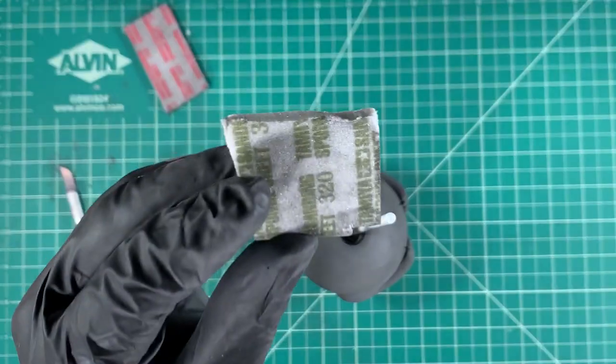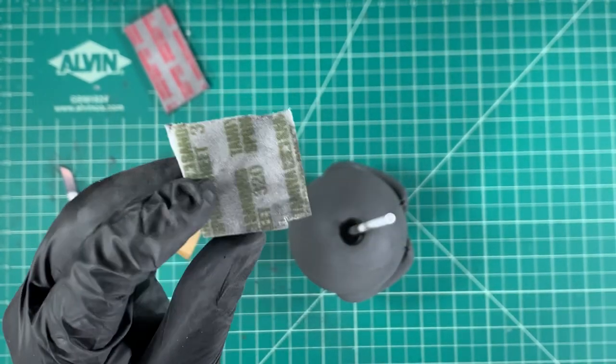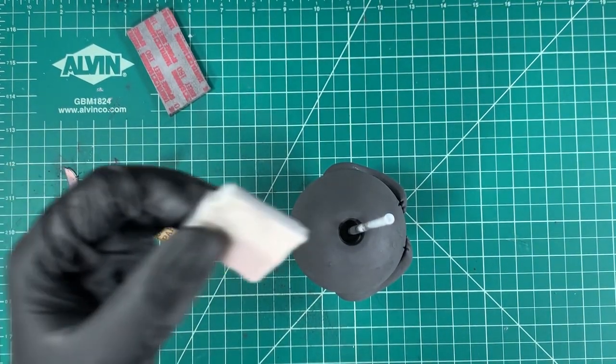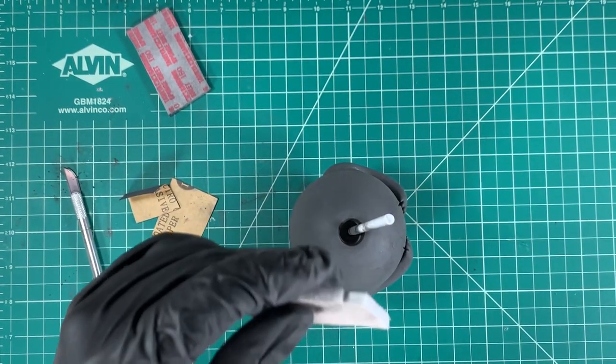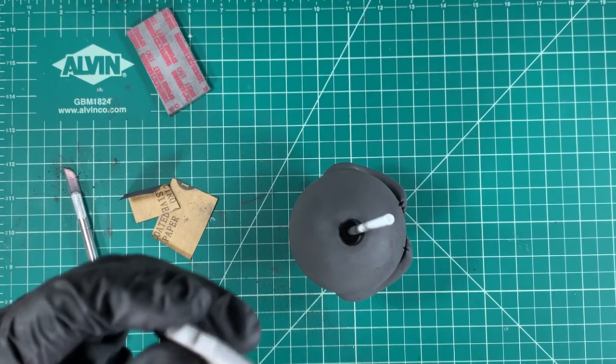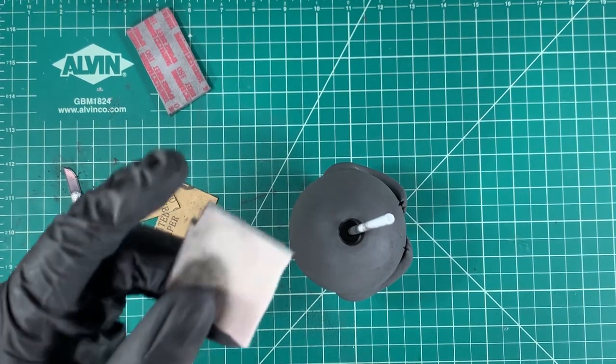Okay, so I'm going to be switching to the 320 grit now. This is a much finer paper. This will start getting rid of some of those imperfection scratches from the 180 grit. As we work out progressively, this will start to look really smooth and almost glass-like.